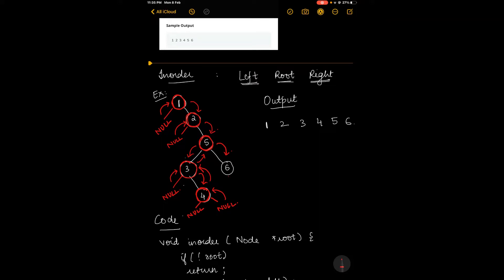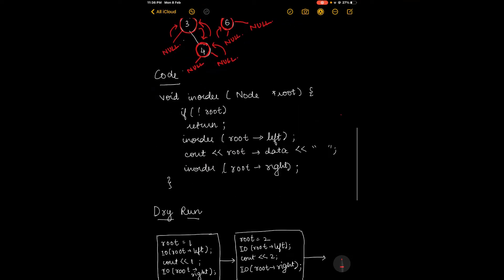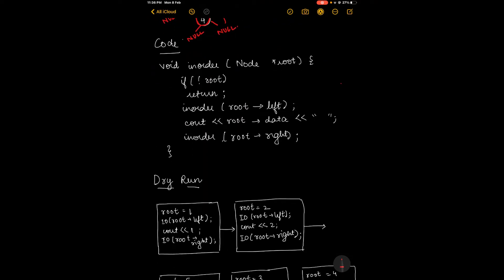From 5, we move on to its right child, which is 6. Root equals 6. We first check for its left child, which is null. We then move back to 6, print it, and check for its right child, which is null again. I hope this traversal was clear. Let's now look into the code, following which I'll discuss the dry run.